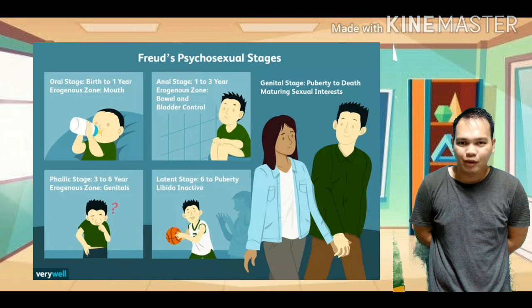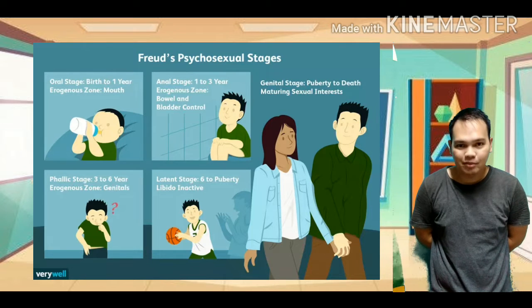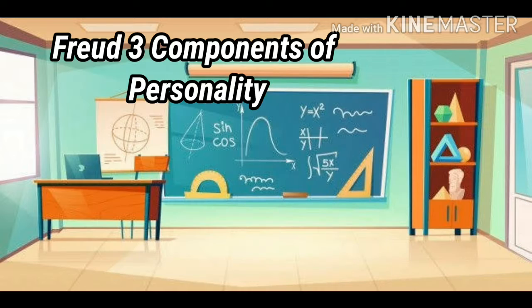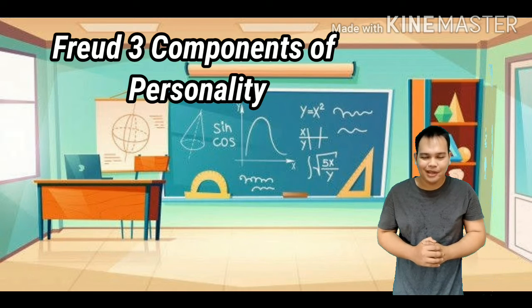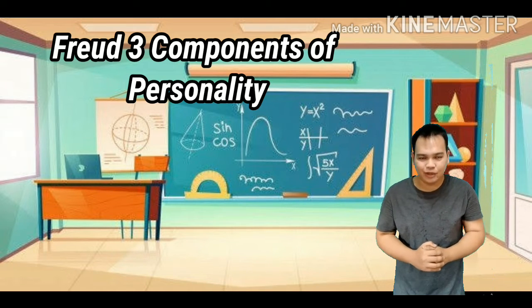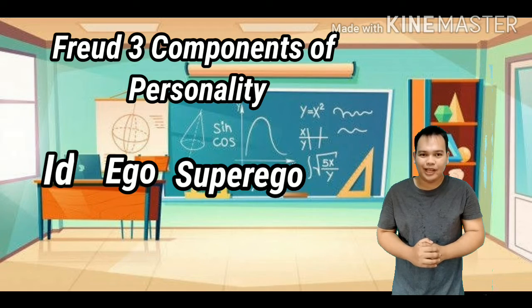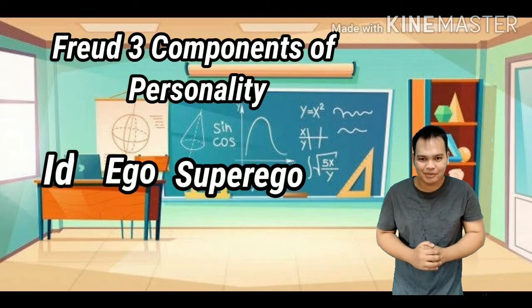The last stage of Freud's psychosexual theory is the genital stage, in which individuals are attracted to the opposite sex. This happens beyond puberty. According to Sigmund Freud, human personality is complex and has more than a single component. In his psychoanalytic theory, Freud states that personality is composed of three elements known as the id, ego, and superego. These elements work together to create complex human behavior.